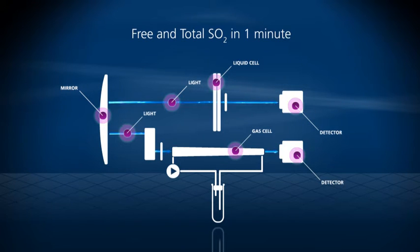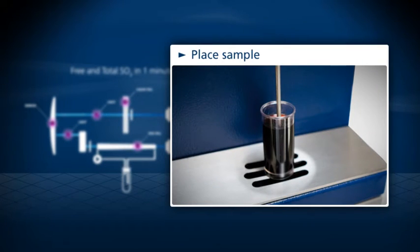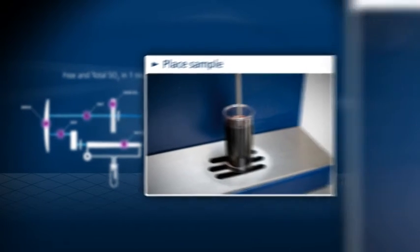Here's how it works. Place the wine sample under the pipette, then press start.